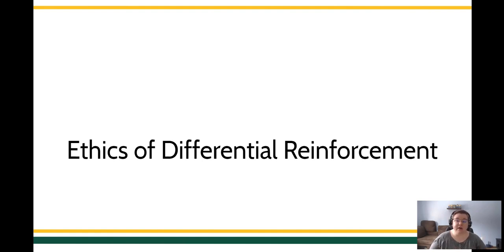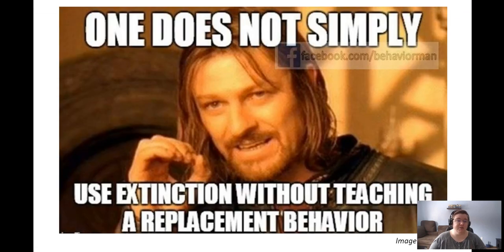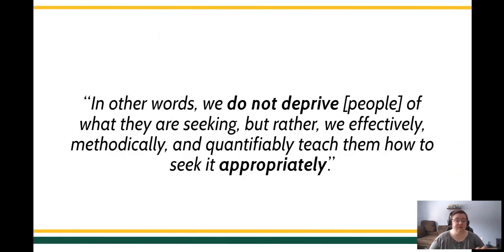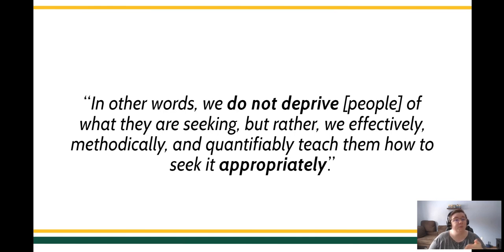I'm going to do just a quick callback to our conversation about extinction. On screen, I'm showing you this meme. It says, 'One does not simply use extinction without teaching a replacement behavior.' What they're saying there is you've got to use differential reinforcement. You have to not just deprive a person of something that they want, something that they need. You don't want to deprive people of reinforcement for the sake of decreasing behavior. You need to be teaching people how to get that reinforcer in a more appropriate way — in a way that's maybe going to be less harmful, going to hurt them less, or harm other people in a much smaller way than the target behavior.